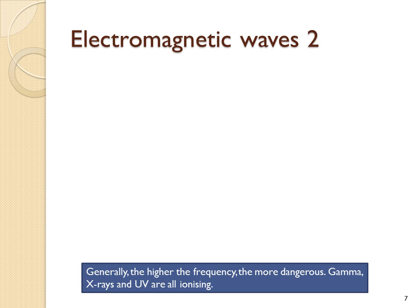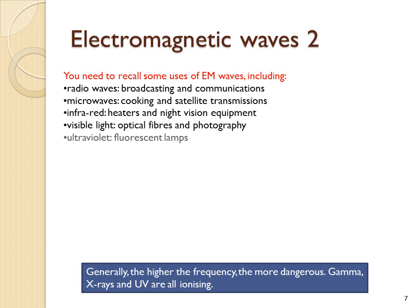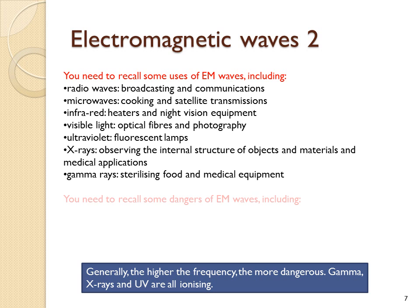Generally, the higher the frequency, the more dangerous the electromagnetic wave. Gamma, X-rays and ultraviolet are all ionising. You need to know about some uses and some dangers of electromagnetic waves. Here are some statements taken from the syllabus. Radio waves are used for broadcasting, microwaves for cooking, infrared for heating, visible light, ultraviolet, X-rays and gamma rays all have uses.